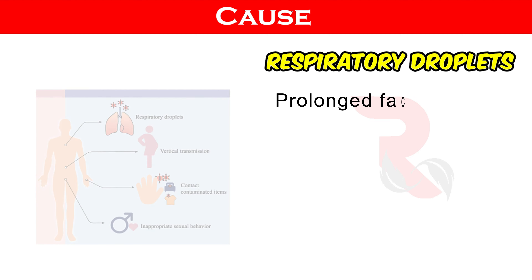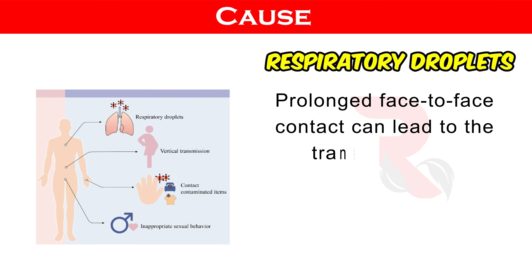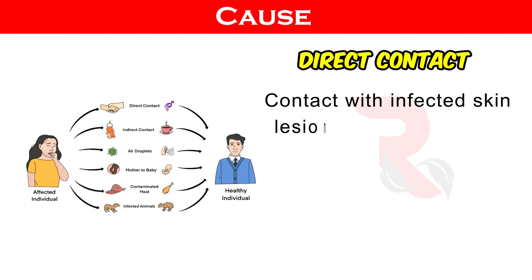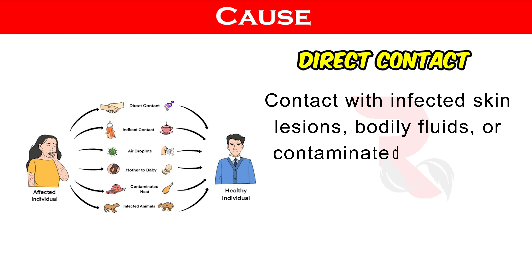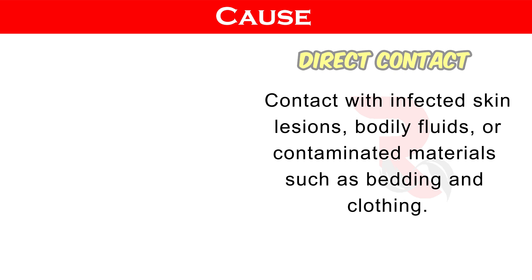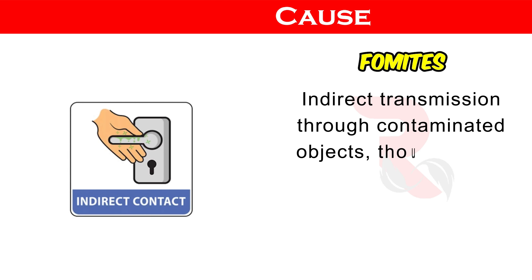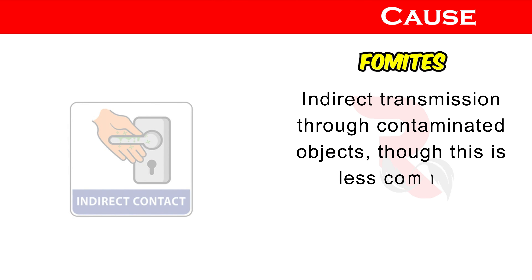Respiratory Droplets: Prolonged face-to-face contact can lead to the transmission of respiratory droplets containing the virus. Direct Contact: Contact with infected skin lesions, bodily fluids, or contaminated materials such as bedding and clothing. Fomites: Indirect transmission through contaminated objects is also possible, though less common.